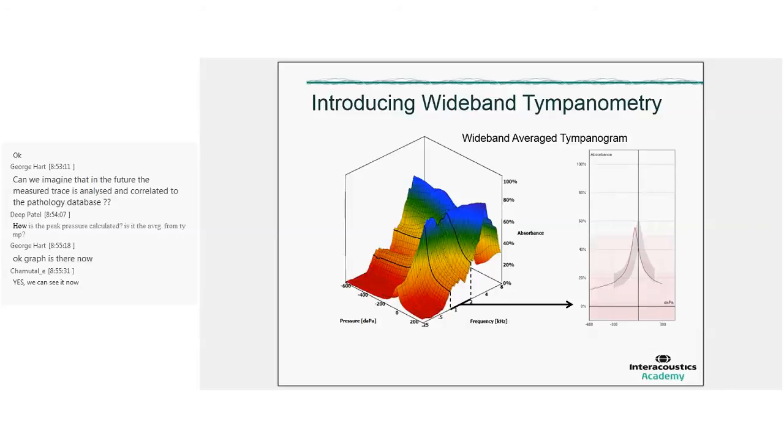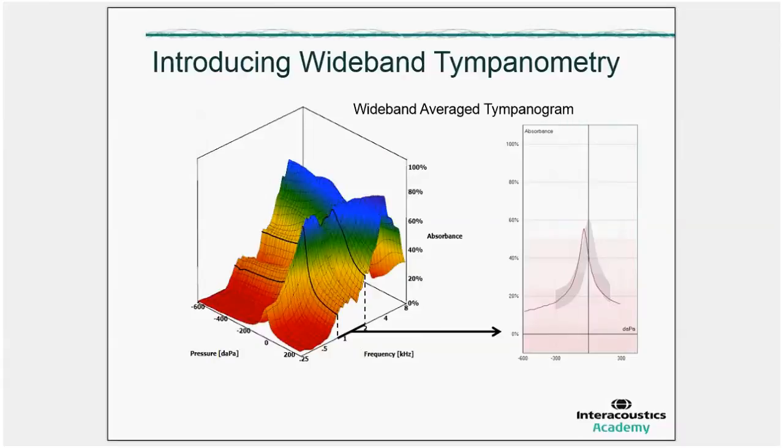And so, generally speaking, in wideband tympanometry, we report the peak pressure. This is the peak pressure that we use if we do a reflex measurement after a 3D measurement. If we look at tympanograms at individual frequencies, then below those tympanograms, in the tympanograms tab, it shows the peak pressure for that slice. But that is not the peak pressure that we use elsewhere if needed.